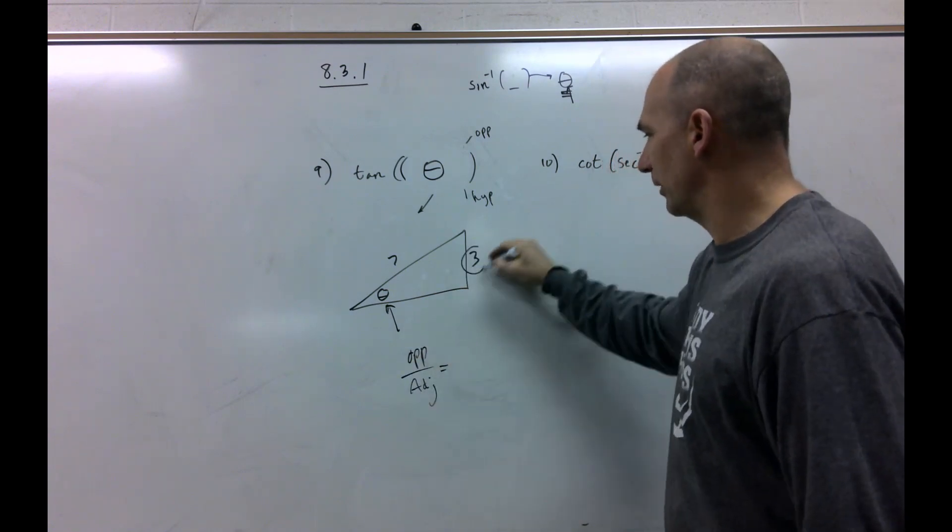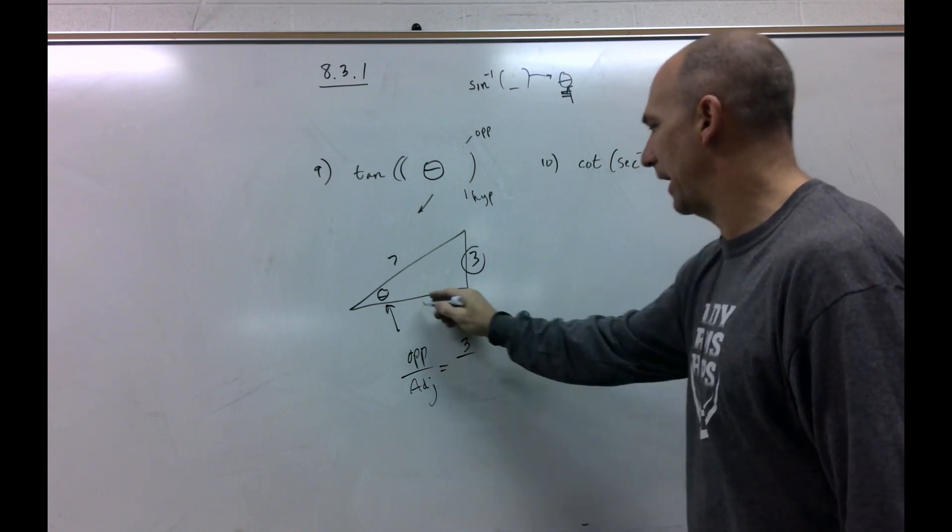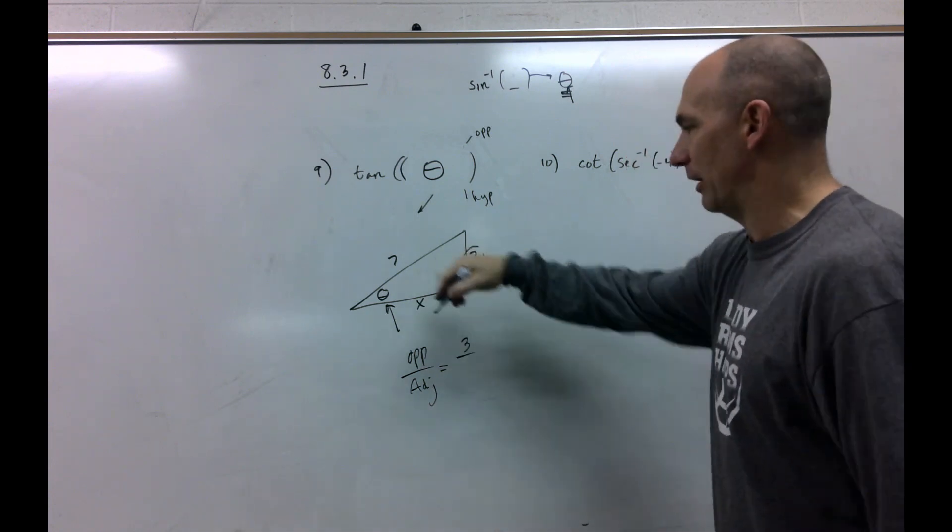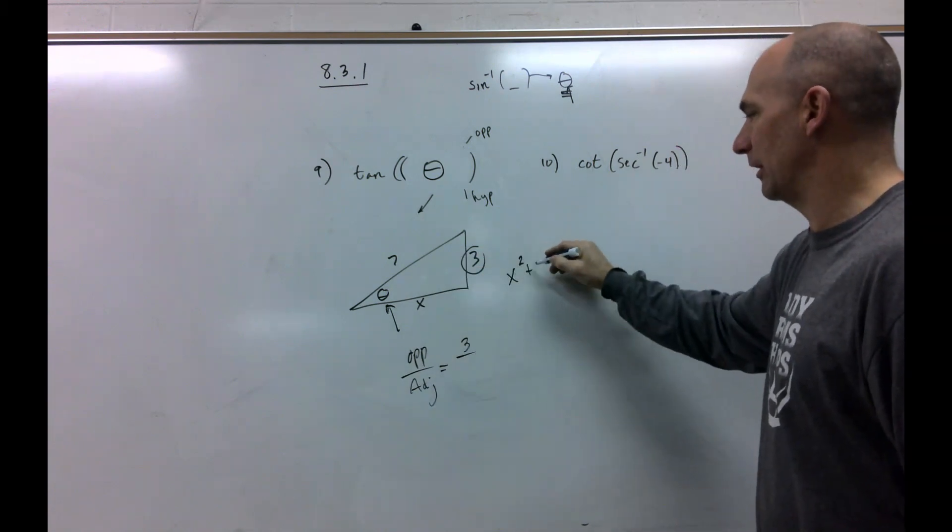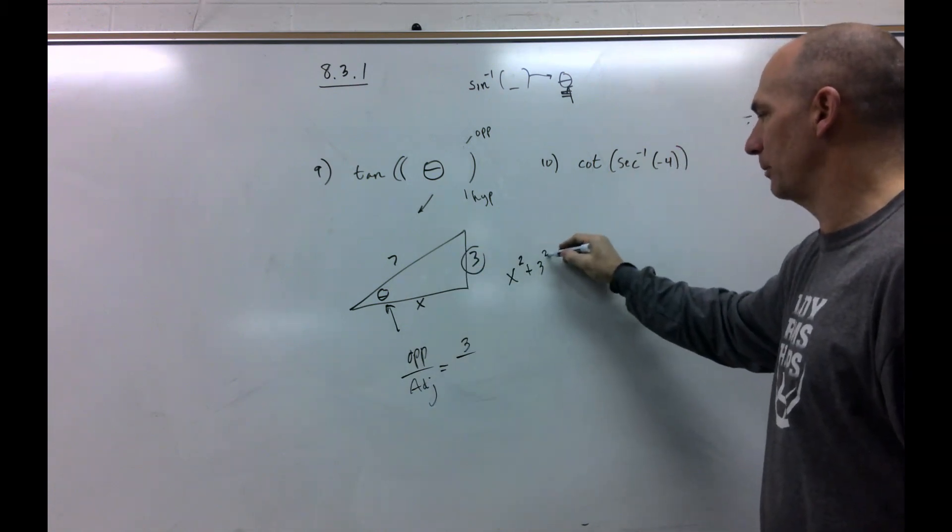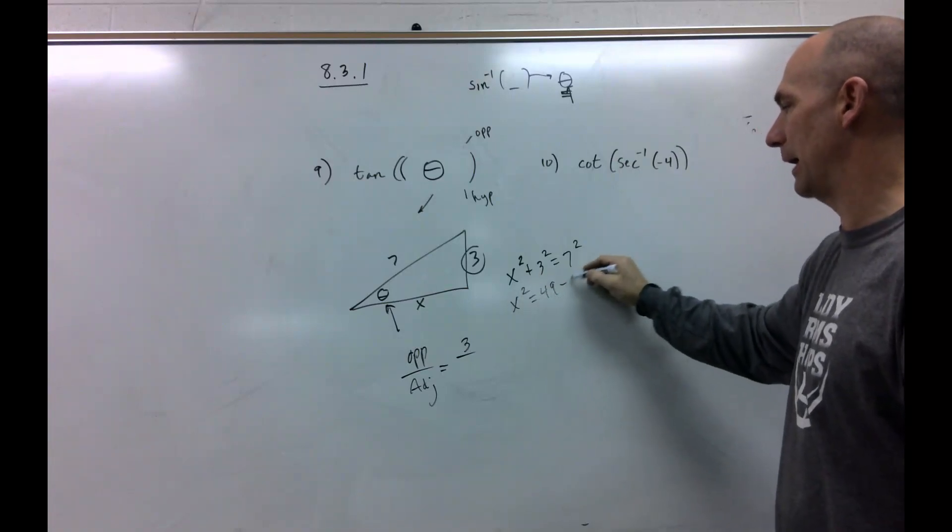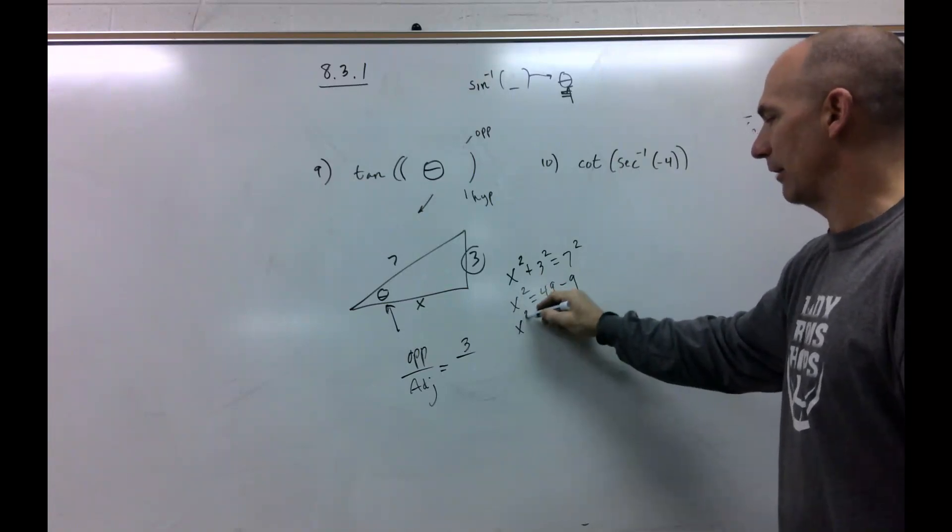Tangent is opposite over adjacent. Well, we know the opposite is three, so now we've got to find this, and that's going to be our adjacent side. There's no special family here. It's not a 30, 60, 90, so a squared plus b squared equals c squared. So, that's x squared equals 49 minus 9, which is x squared equals 40.